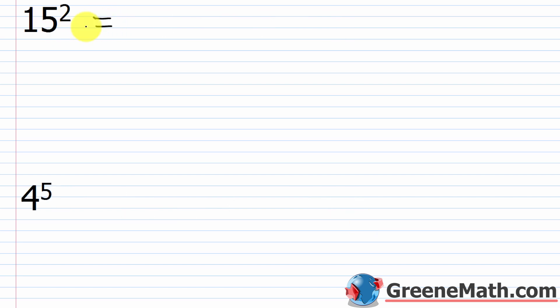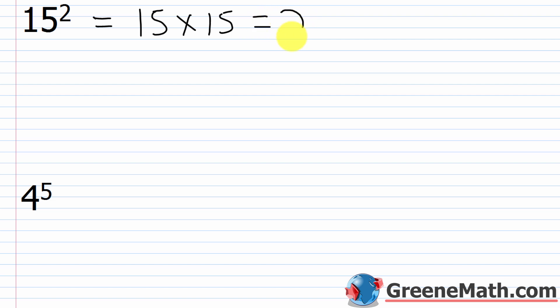What about 15 squared? We write this as 15 times 15 and then multiply. I happen to know 15 times 15, but if you don't, do vertical multiplication. The answer is 225 — and this is one that comes up quite a bit.